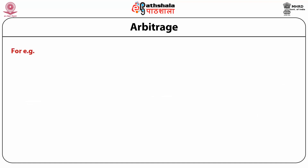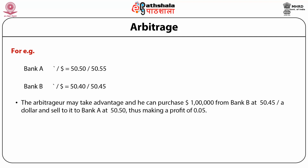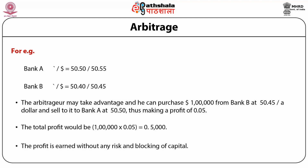For example, consider two banks — Bank A and Bank B — both offering bid and ask prices. Bank A is offering 50.50 and 50.55, and Bank B is offering 50.40 and 50.45 US dollars. The rates are very close. What the arbitrager will do to take advantage is purchase 1 lakh US dollars from Bank B at 50.45 per dollar and sell to Bank A at 50.50. Thus, making a profit of 0.05 per dollar. The total profit would be 1 lakh multiplied by 0.05, which comes to 5,000. The profit is earned without any risk and without blocking of capital.